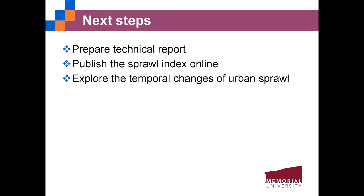We also aim to prepare a technical report clarifying the process of creating the composite sprawl score, including deriving indicators from raw datasets — for example, GIS operations used to calculate the percentage of four-or-more-way intersection density in a census tract — as well as the details of the statistical modeling. Once results are available, we will publish them online. We hope this research will facilitate nationwide environmental health studies and health comparisons within different settings, and we will also investigate how urban sprawl evolved over the past two decades using a spatiotemporal statistical model.